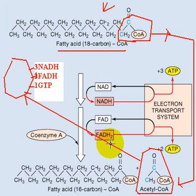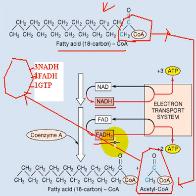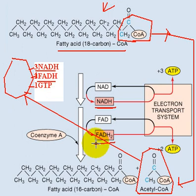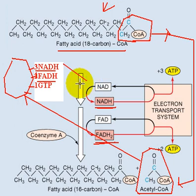What else is produced in this reaction? The beta-oxidation step itself also produces 1 NADH and 1 FADH. So in total, you get 3 NADH from the Krebs cycle plus 1 NADH from beta-oxidation — that's 4 NADHs — and 1 FADH from the Krebs cycle plus 1 FADH from beta-oxidation — that's 2 FADHs — plus 1 GTP.